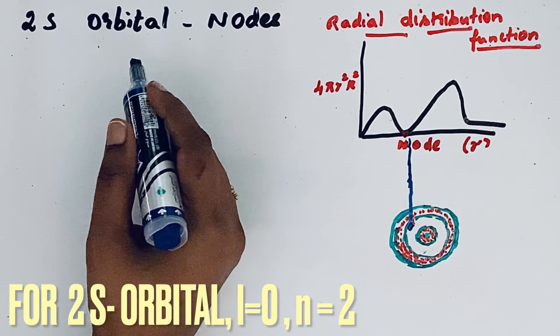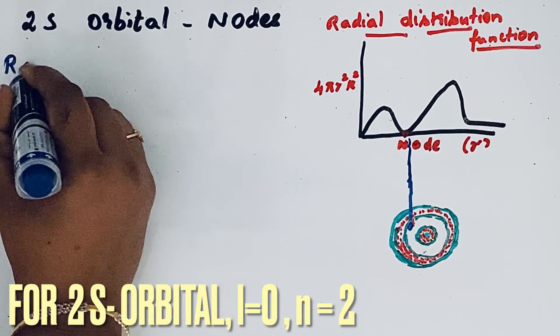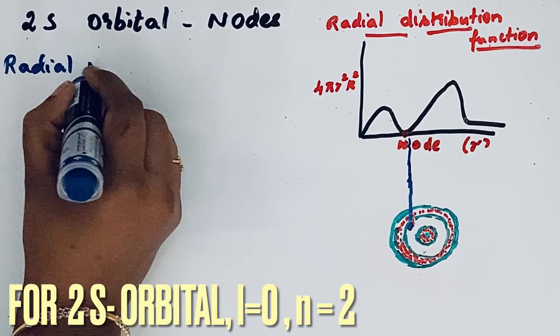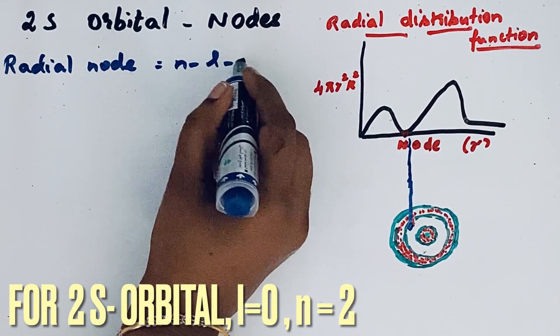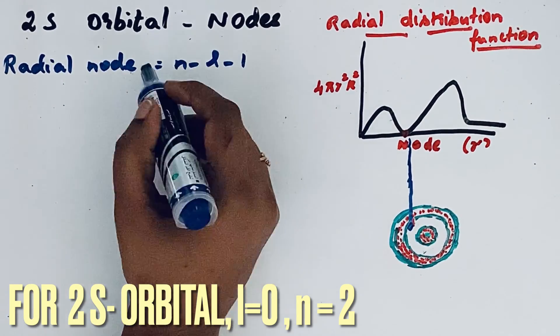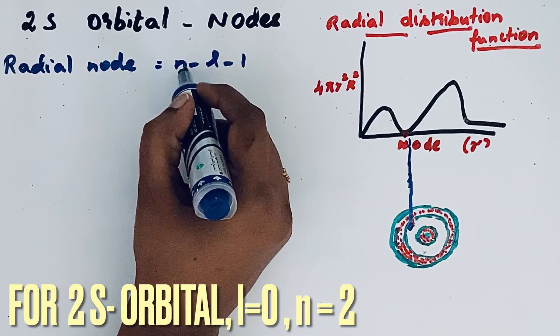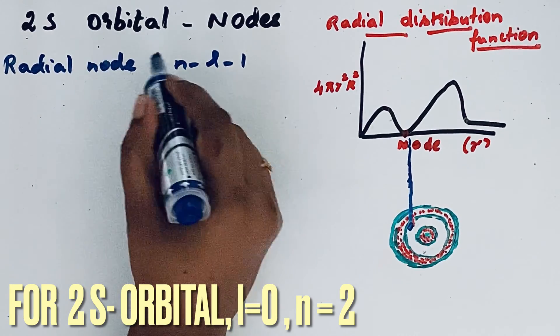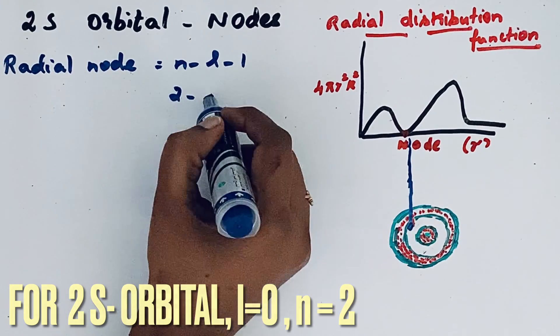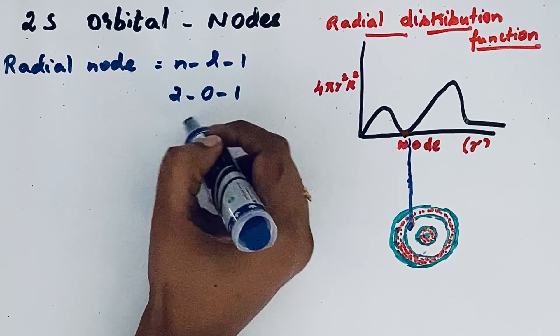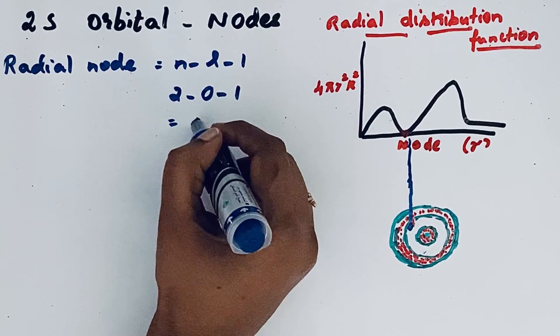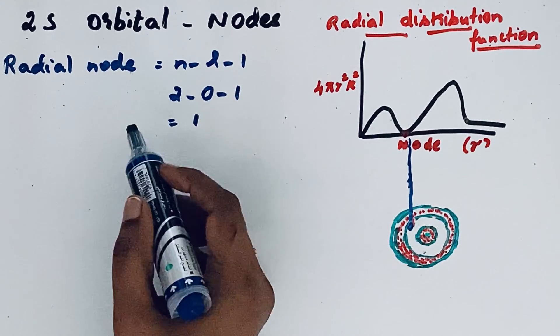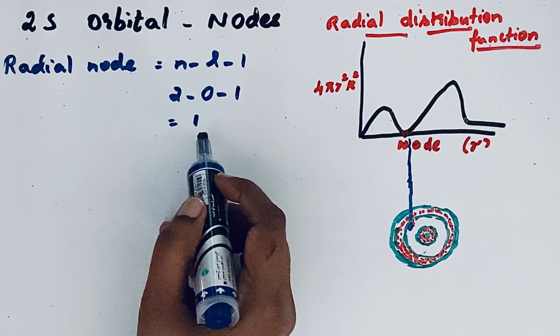For 2s orbital, for finding the radial node, the formula is n minus l minus 1. For 2s orbital, n is equal to 2. So 2 minus, for s orbital l is equal to 0, minus 1. So 2 minus 0 minus 1 equals 1. That means one radial node is present in 2s orbital.